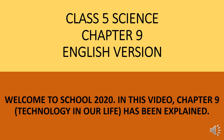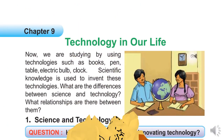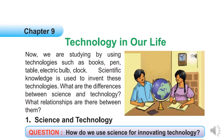Welcome to School 2020. In this video, Chapter 9 - Technology in Our Life has been explained. We are studying by using technologies such as books, pen, table, electric bulb, and clock. Scientific knowledge is used to invent these technologies. What are the differences between science and technology?